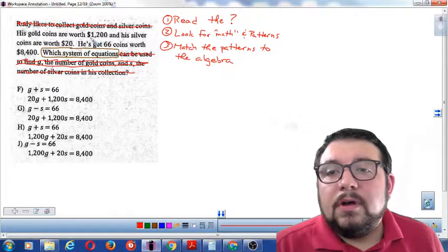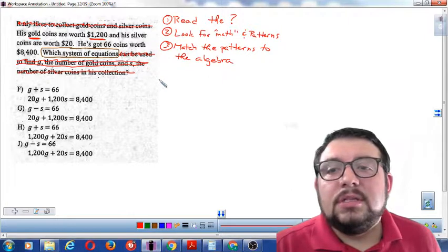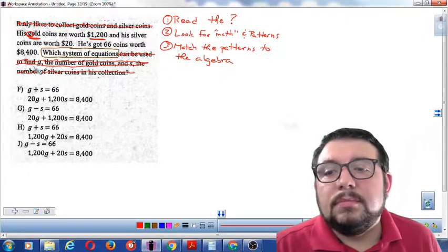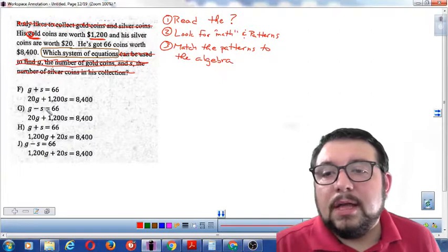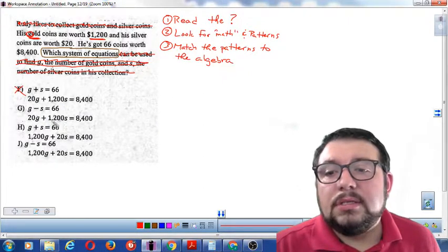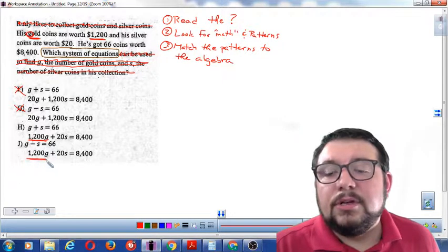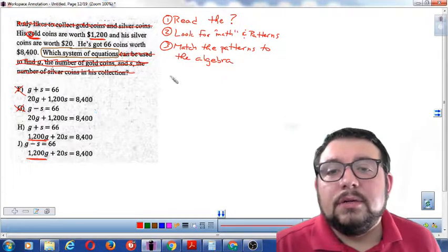His gold coins are worth $1,200. So gold is worth $1,200. That seems like a pattern. I should see the number $1,200 and the letter G together somewhere in my answer. This does not have $1,200 in G. This does not have $1,200 in G. So he's out. This does not have $1,200 in G. This does not have $1,200 in G. So he's out. This one has $1,200 in G. So that looks good. This one has $1,200 in G. So that's good.